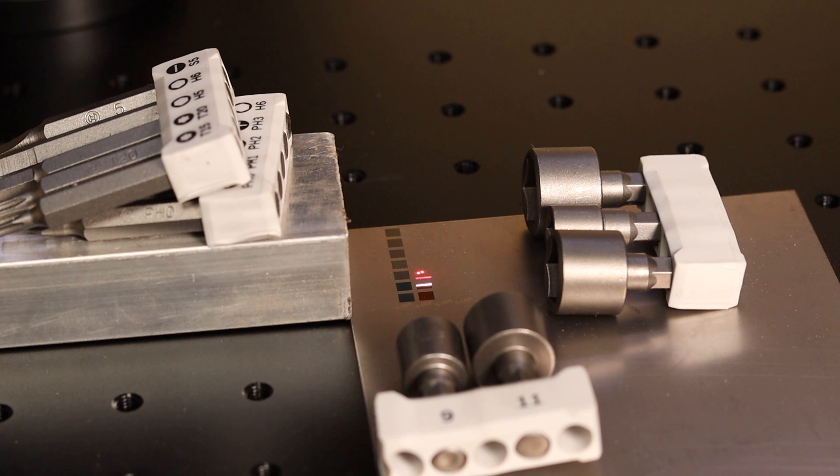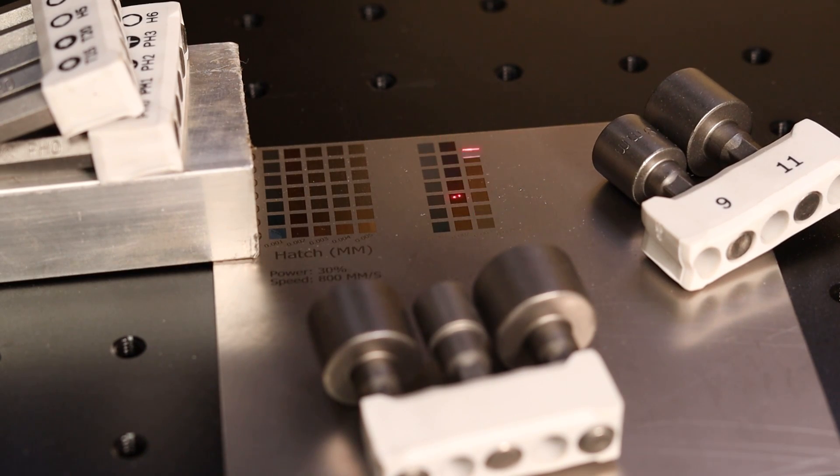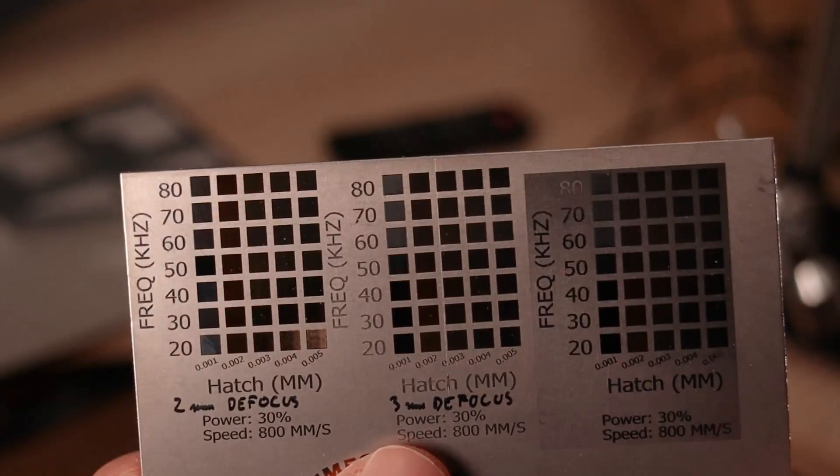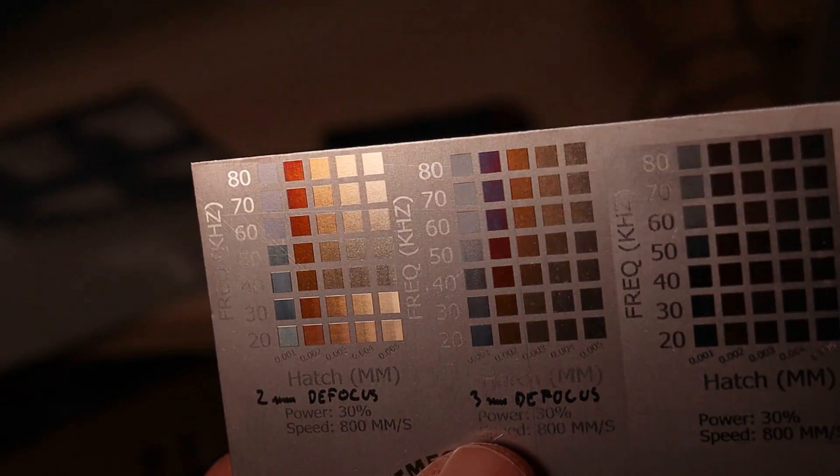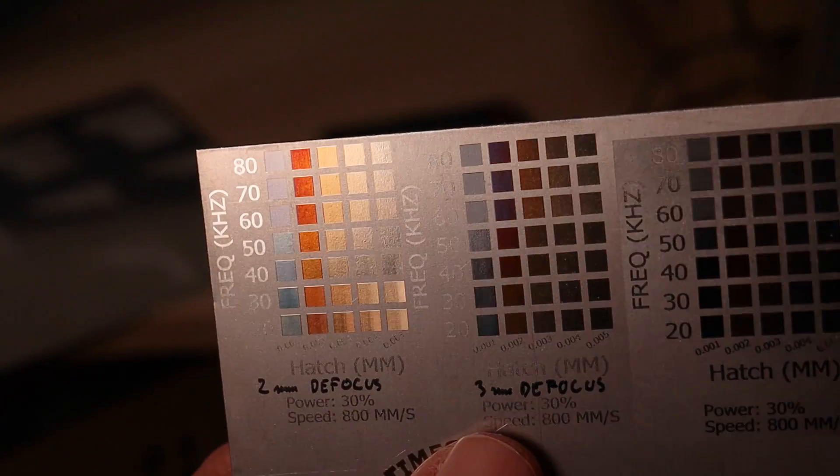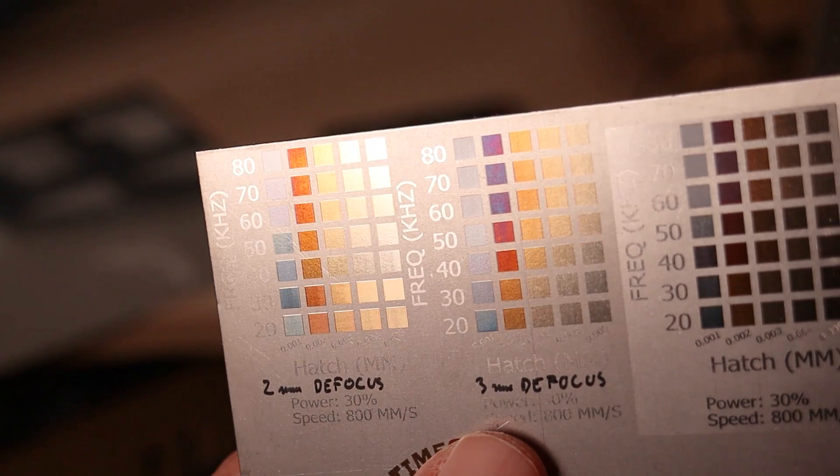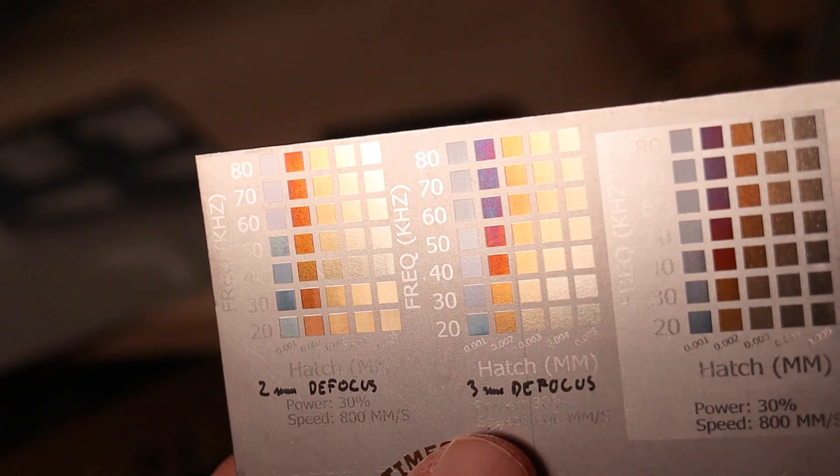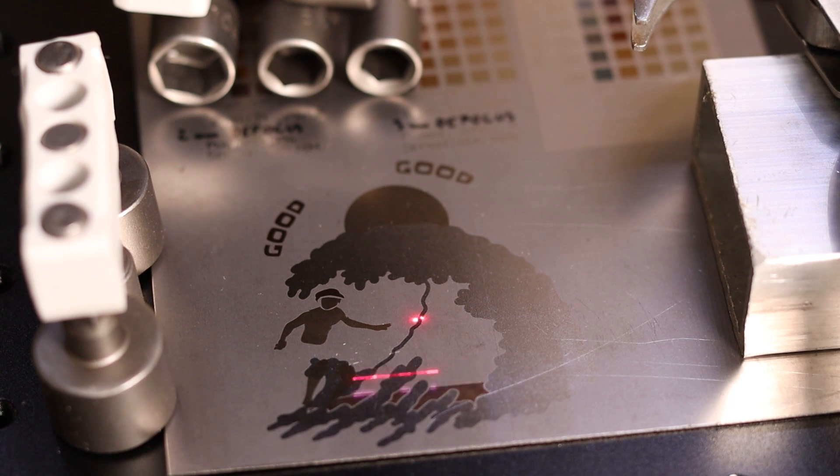With the right settings you can also produce colored engravings on titanium. With a dense hatching pattern and by defocusing the beam for a few millimeters, you can produce a wide range of colors on titanium. This process is called annealing. It is heating the metal to different temperatures which cause the colored oxide layer to form on the surface. This is permanent coloring that does not come off easily. With some practice you can make very cool colored designs on titanium.